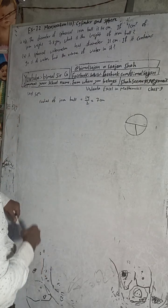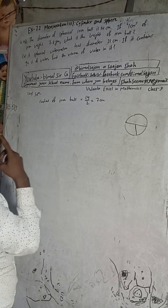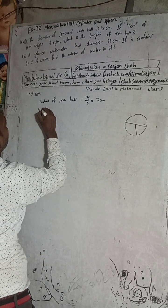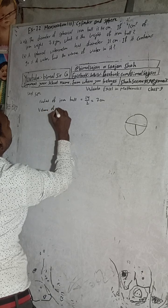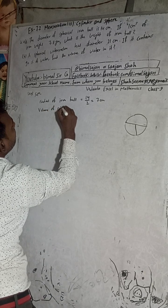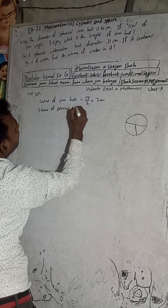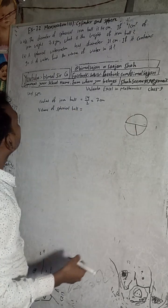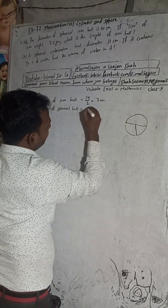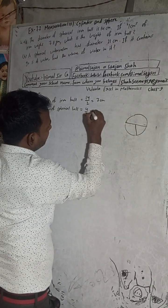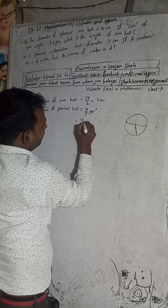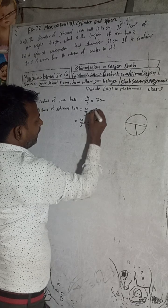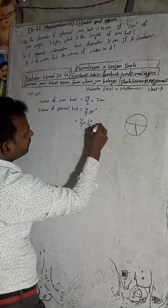Now, the volume of the iron ball. The volume of a spherical ball is equal to 4/3 π r³. So we have 4/3, pi value is 22/7, and r is 7, so r³ means 7 multiplied three times.